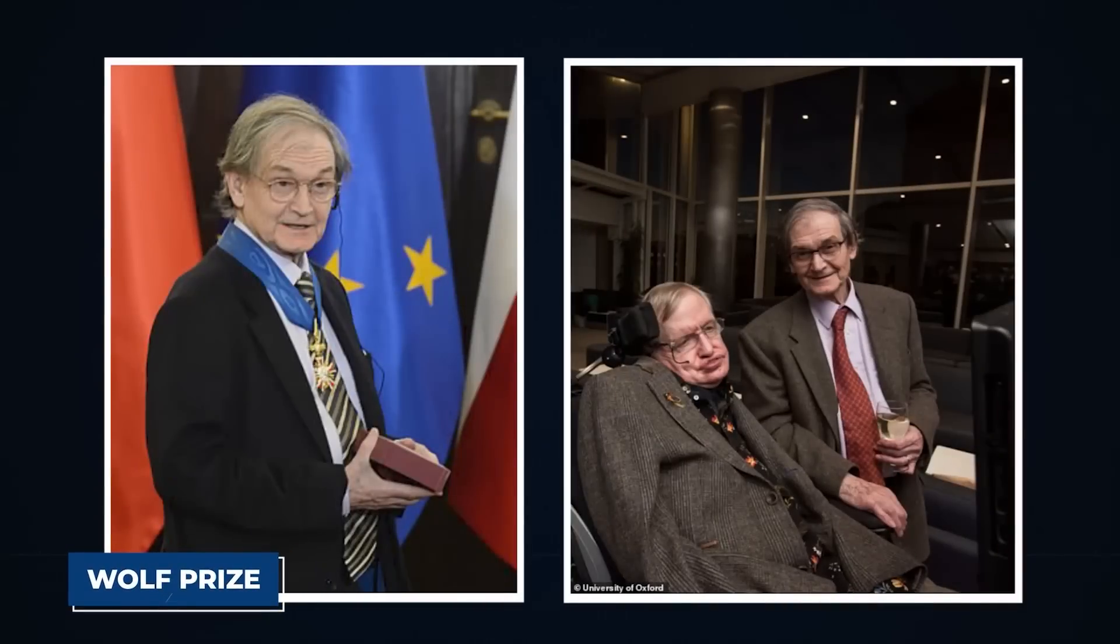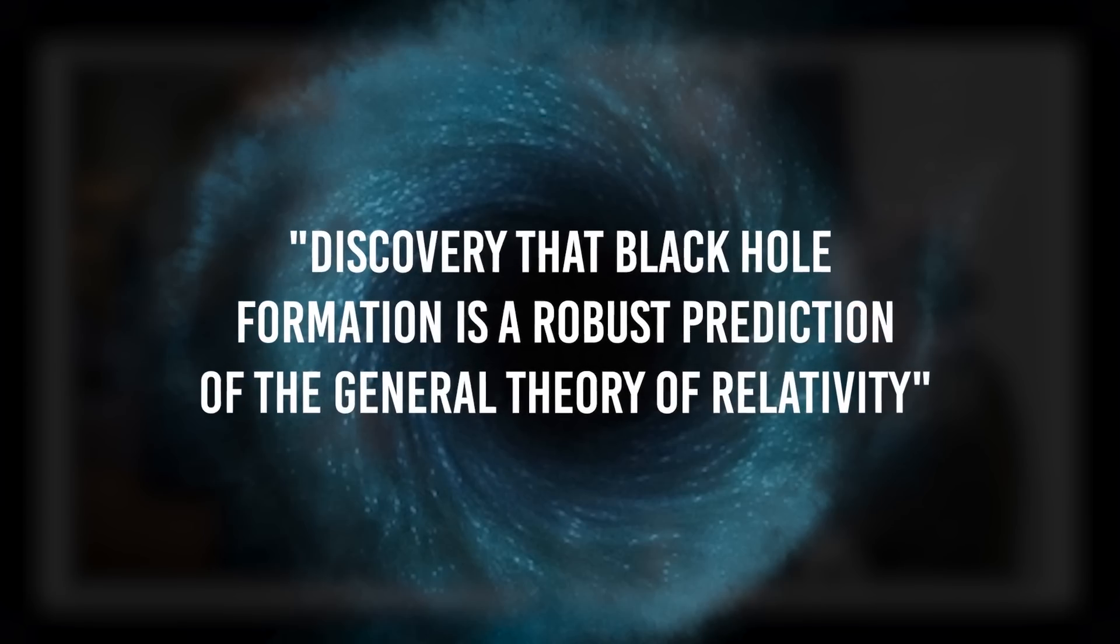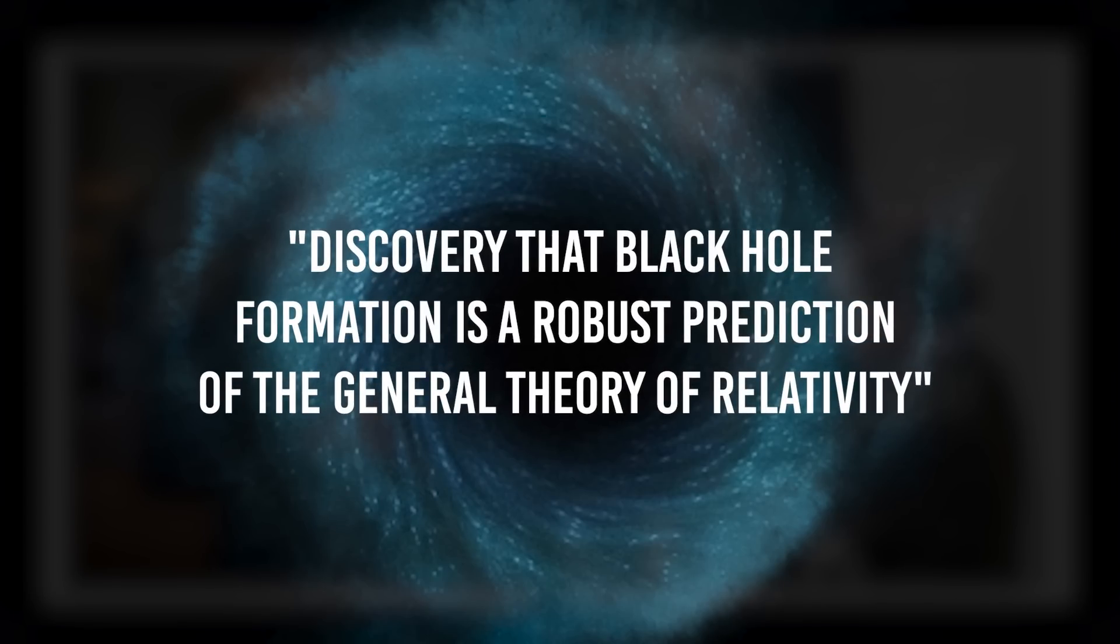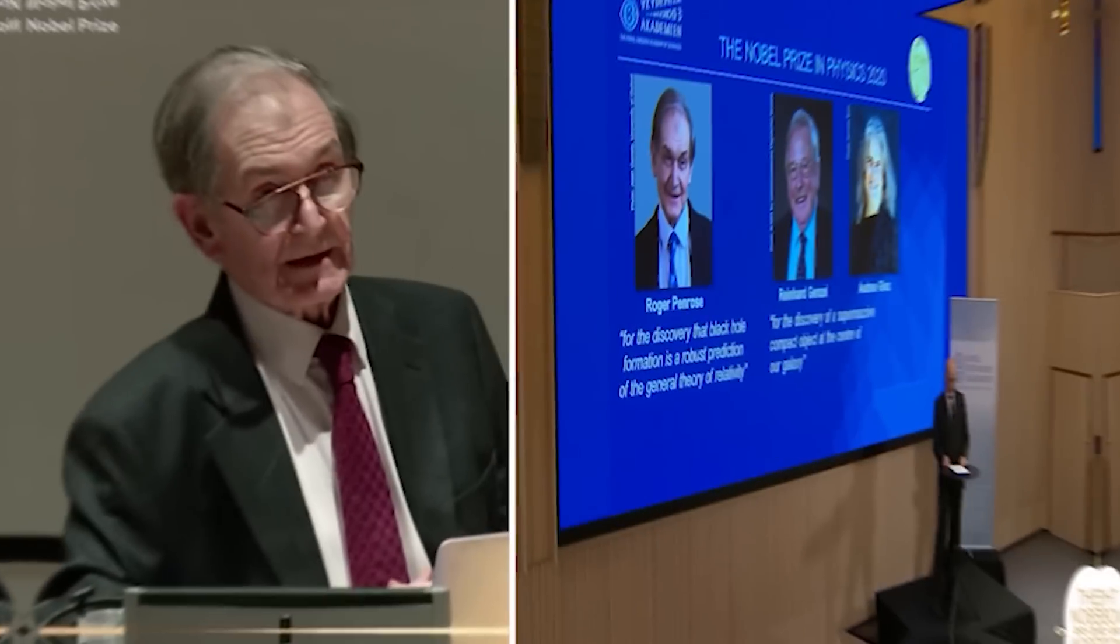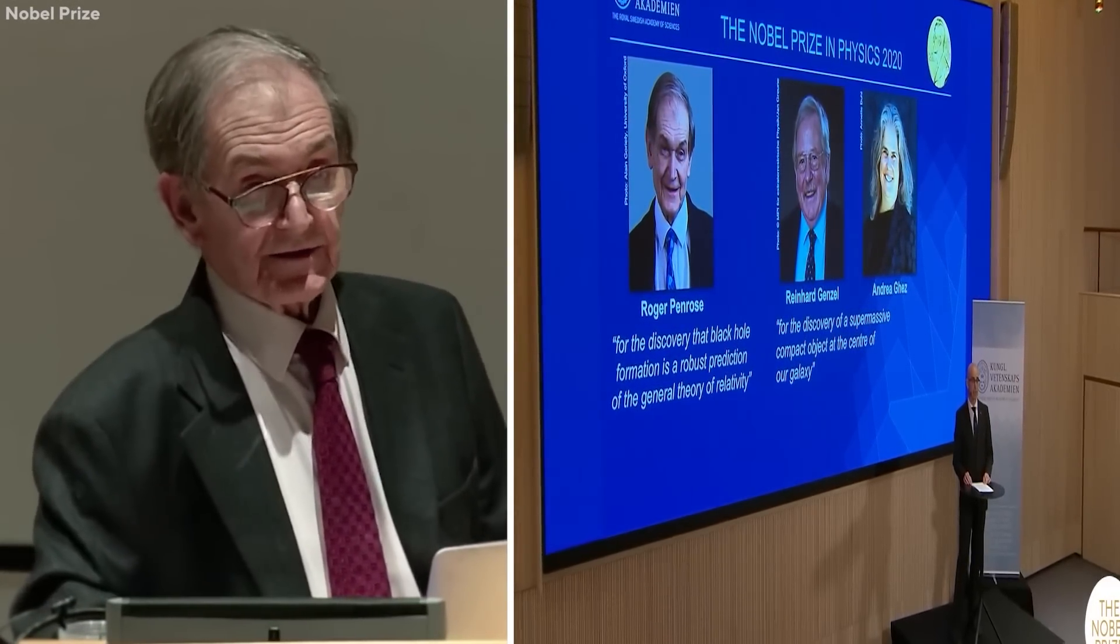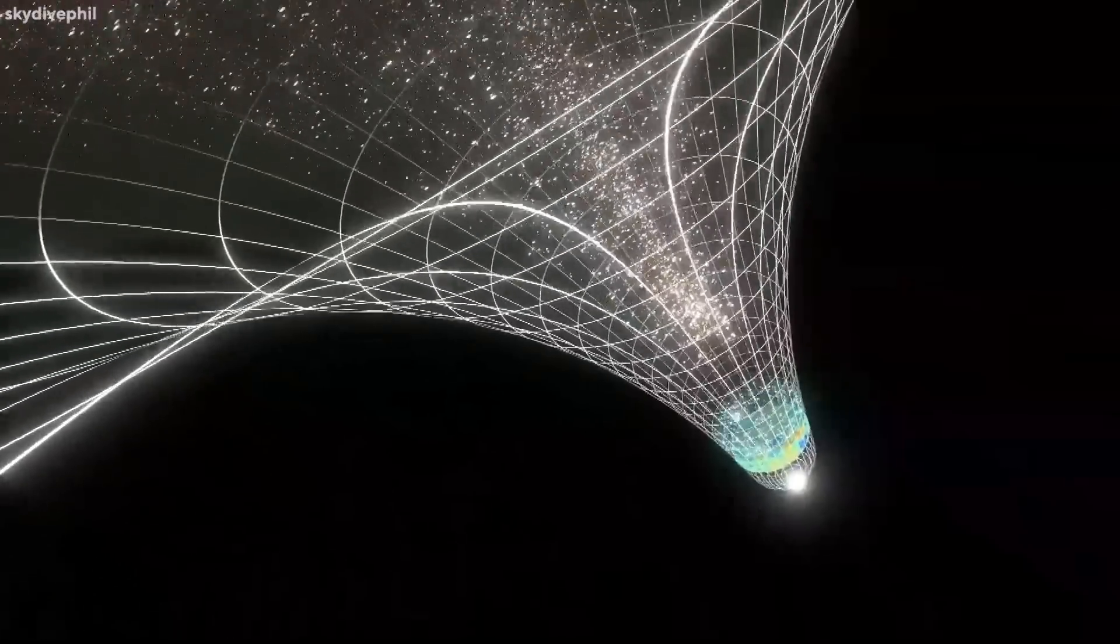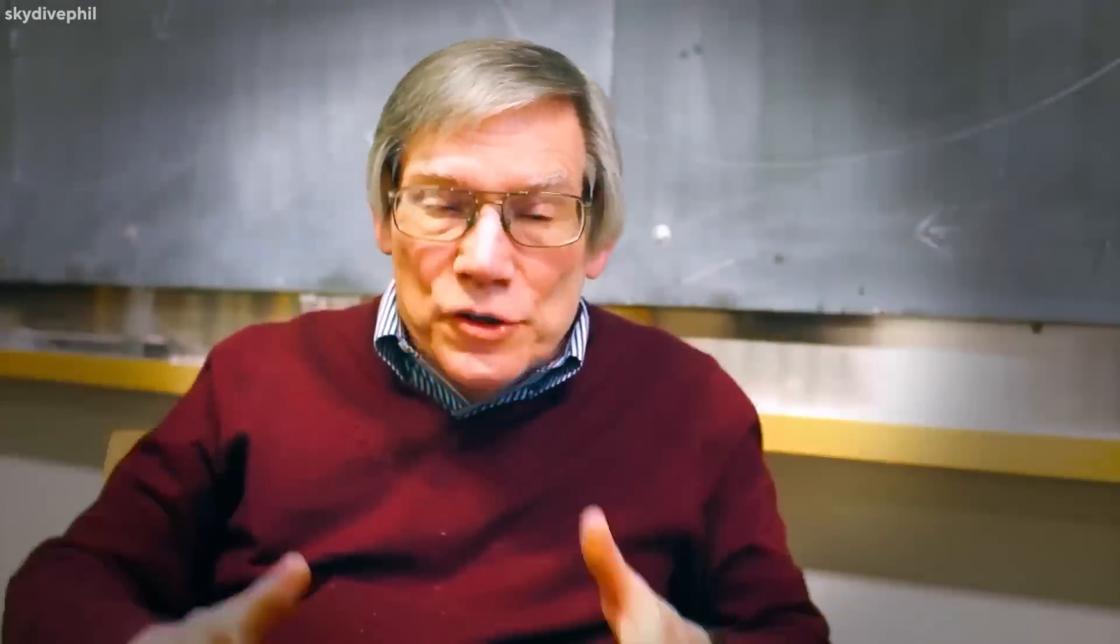Penrose is a well-respected mathematician and physicist who has contributed to the general theory of relativity and cosmology. He received the Wolf Prize in Physics, which he shared with Stephen Hawking in 1988, and won half of the Nobel Prize in Physics in 2020 for the discovery that black hole formation is a robust prediction of the general theory of relativity. He is regarded as one of the greatest living physicists, and when he postulated his theory on the origins of the universe, it took the science community by surprise.